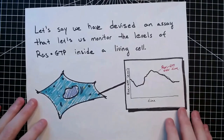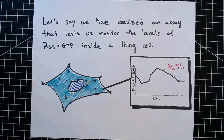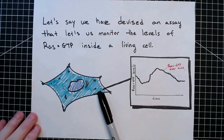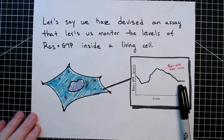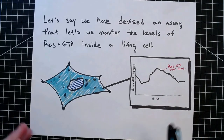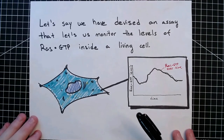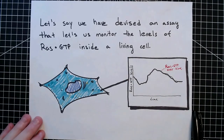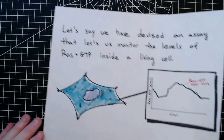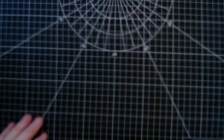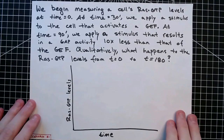Let's say that we have devised an assay that lets us monitor the levels of RAS-GTP inside a living cell. There's some cell here, and we as experimentalists have come up with an assay where we can measure the levels of activated RAS in the cell over time. I'll just mention this assay doesn't actually exist in the laboratory right now, so if you get really excited about RAS, you should be thinking about ways to develop really good assays like this.